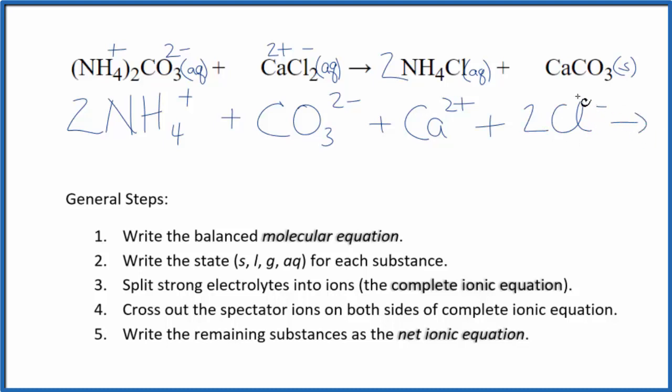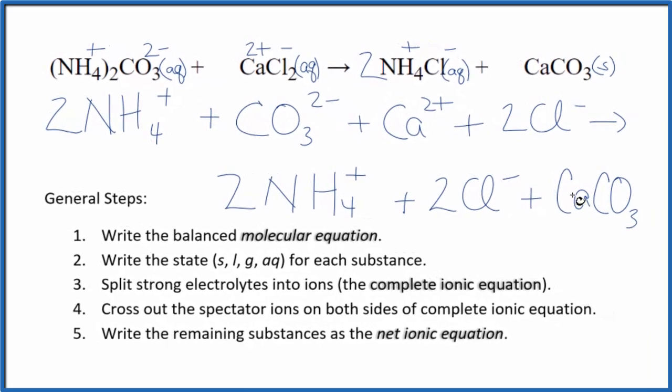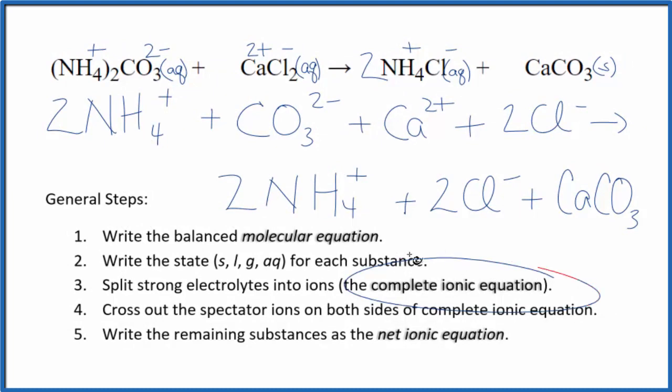So those are the reactants in our net ionic equation. For the products here, we have two ammonium ions again, and we also have two chloride ions. And then for the calcium carbonate, that's a solid. We don't split solids apart in net ionic equations, so that just stays together as CaCO3. So this is the complete ionic equation.